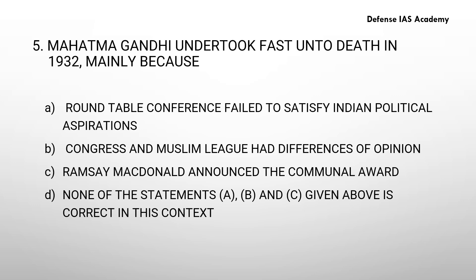Question 5: Mahatma Gandhi undertook fast unto death in 1932 mainly because — Option A: the round table conference failed to satisfy Indian political aspirations. Option B: Congress and Muslim League had differences of opinion. Option C: Ramsay MacDonald announced the communal award. Option D: none of the statements A, B and C given above is correct in this context. The answer is option D: none of the statements A, B and C given above is correct in this context.